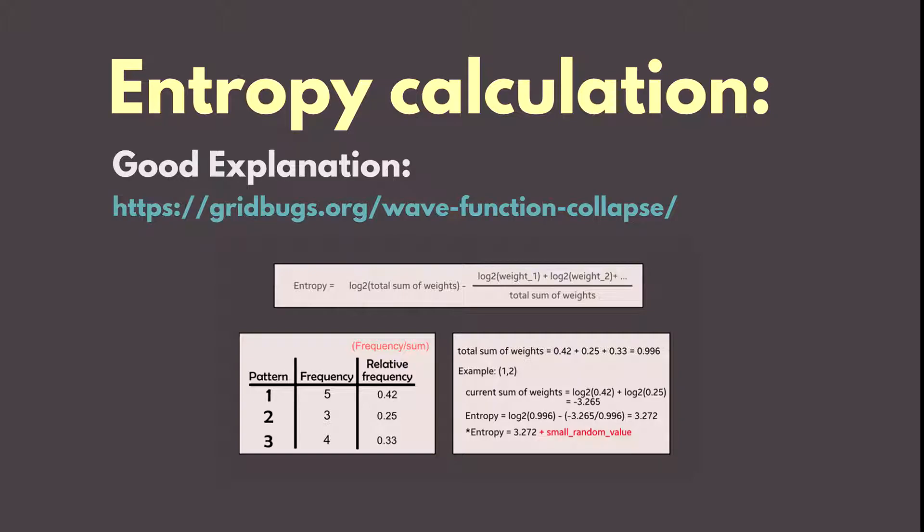The equation is taking the logarithm of base 2 for the total sum of weights, so the sum of relative frequencies. And we subtract from it a division of sum of currently possible indices for our tile. And not the weights but the logarithms of each weight. And dividing the sum by the total sum of weights.